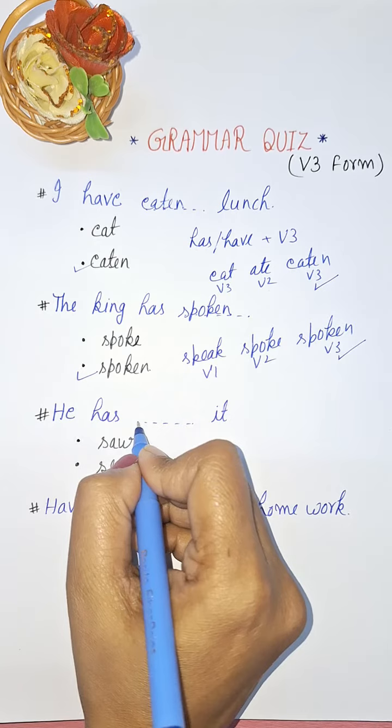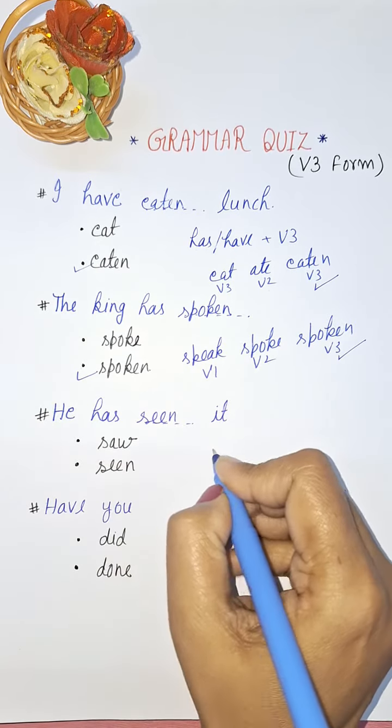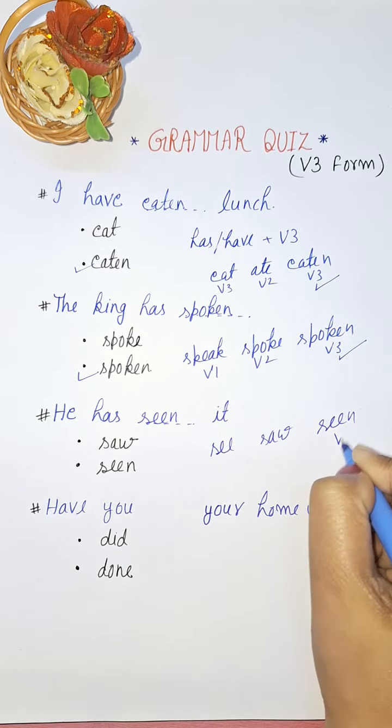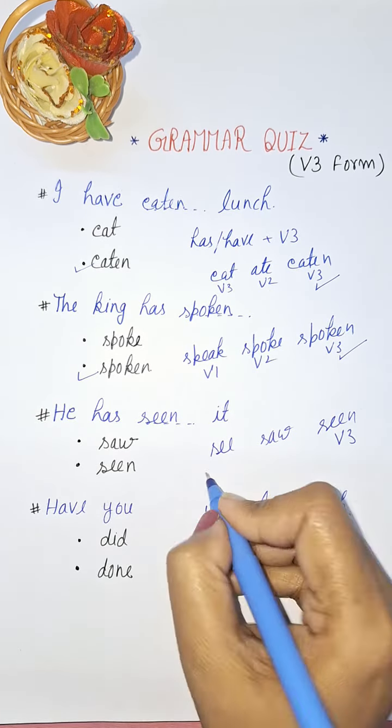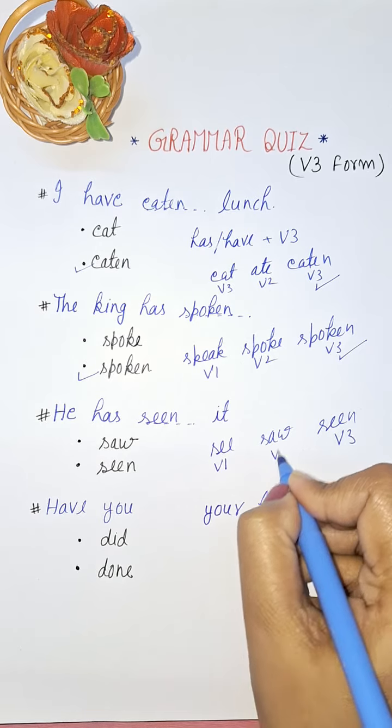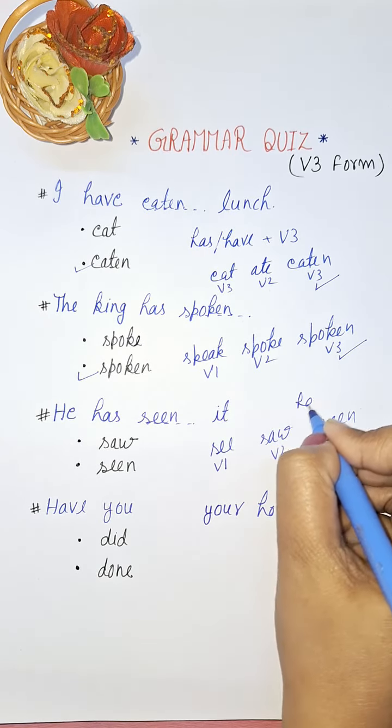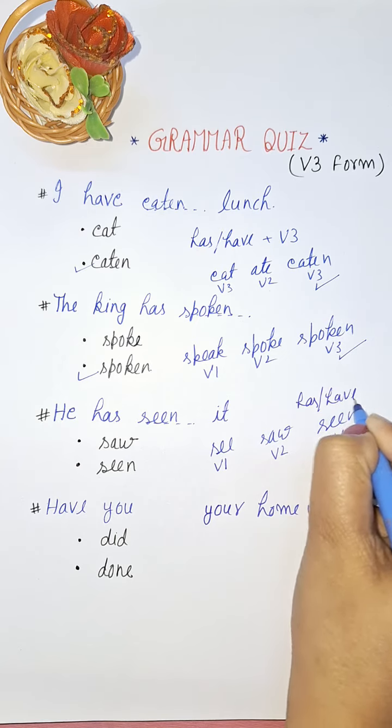The forms are see, saw, and seen. This is V3 form, past participle form. This is V1 and this is V2 form. So we'll use here V3 form. Always with has and have we use V3 form of the verb.